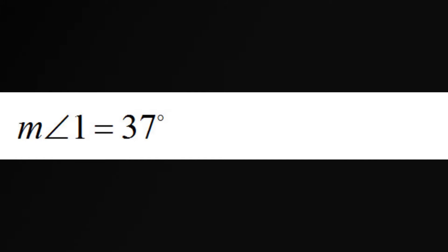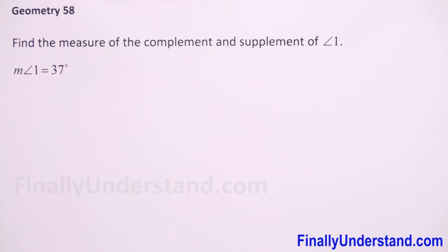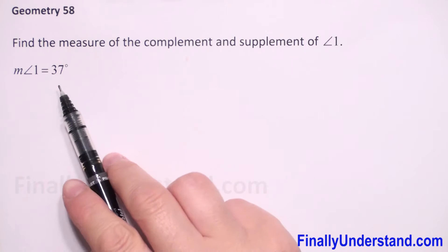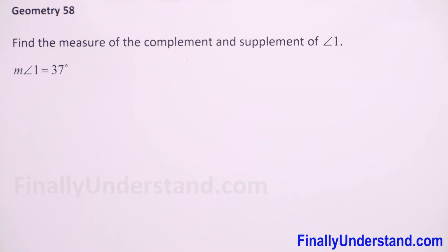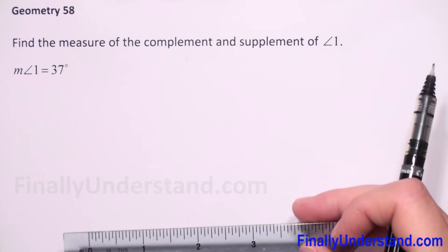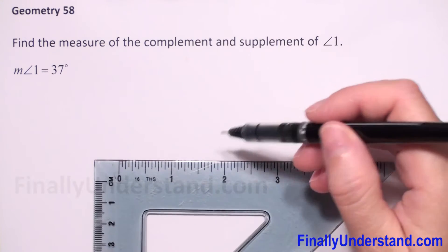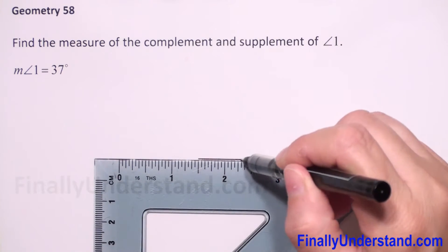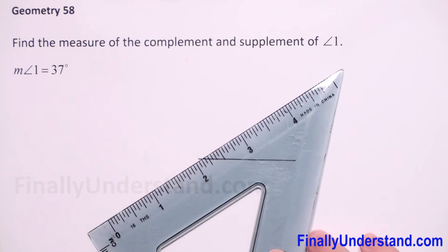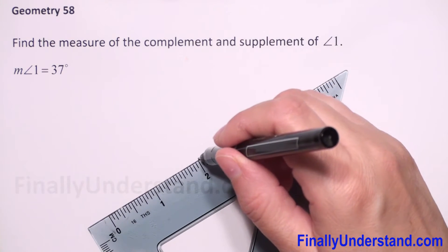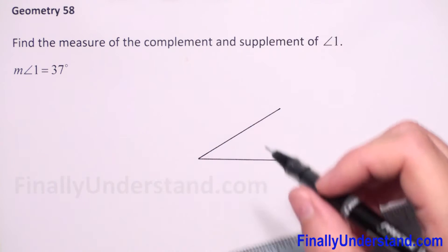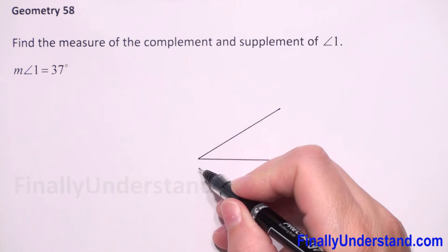We have to find the measure of the complement and supplement of angle one. Angle one has a measure of 37 degrees, which is less than 90 degrees, so this angle is acute. We can draw it — this is approximately 37 degrees, this is our angle one.